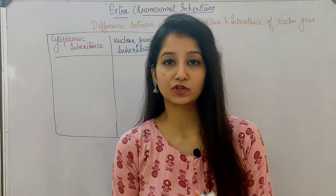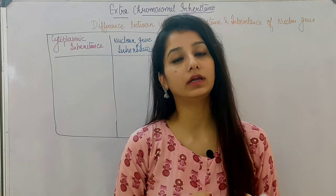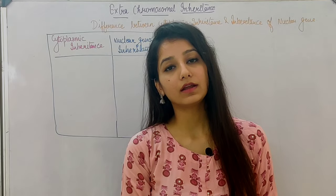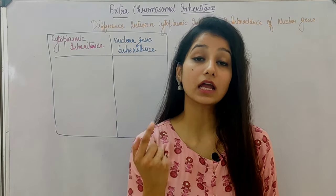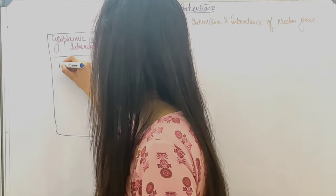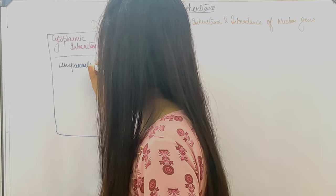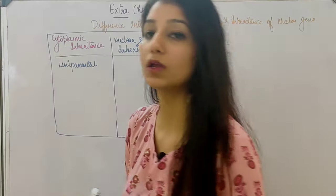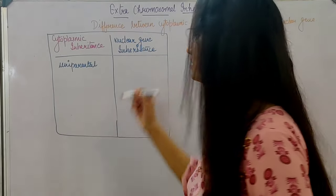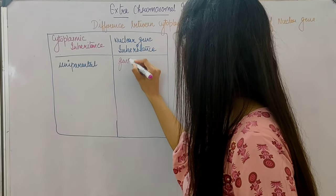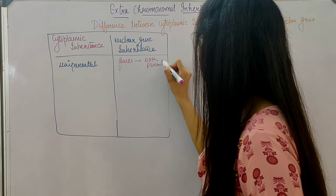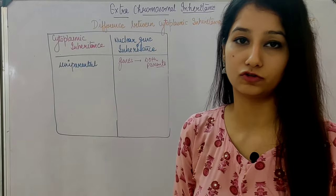Now let's see the difference between cytoplasmic inheritance and nuclear inheritance. In cytoplasmic inheritance, the genes are coming from only one parent — so it is uniparental inheritance. While if we consider nuclear gene inheritance, the genes are coming from both parents. Both parents are responsible for the nuclear genes of the offspring.